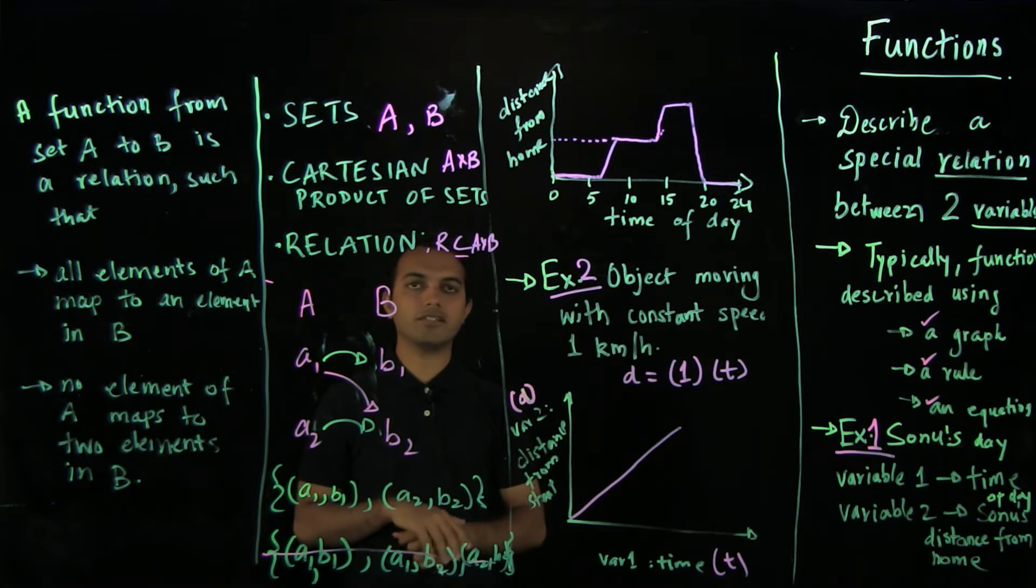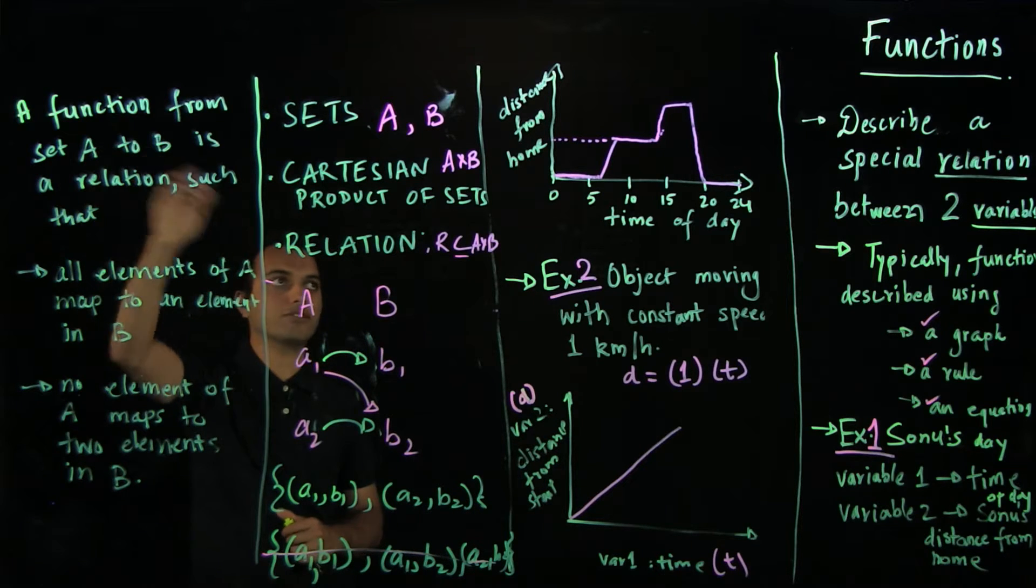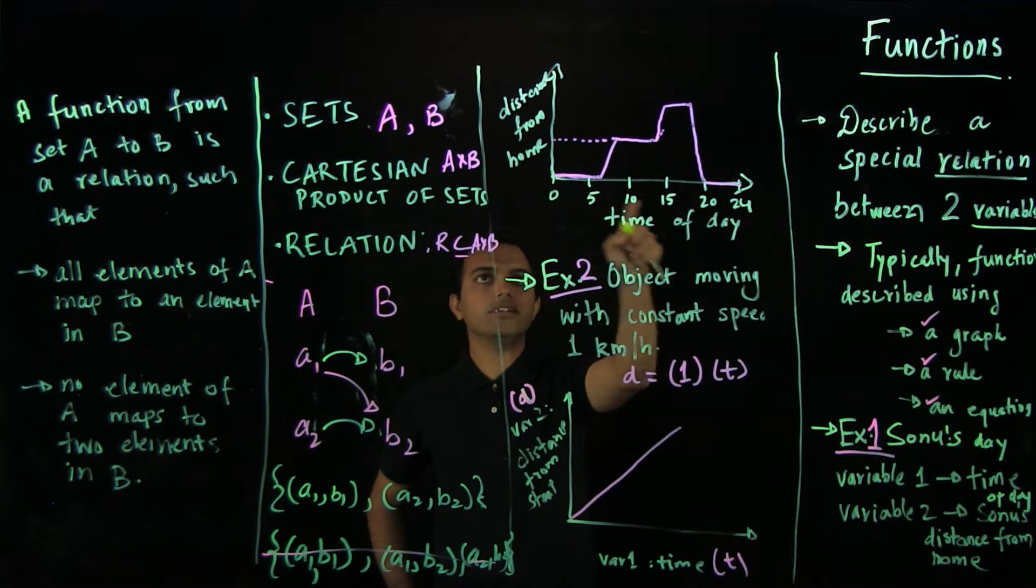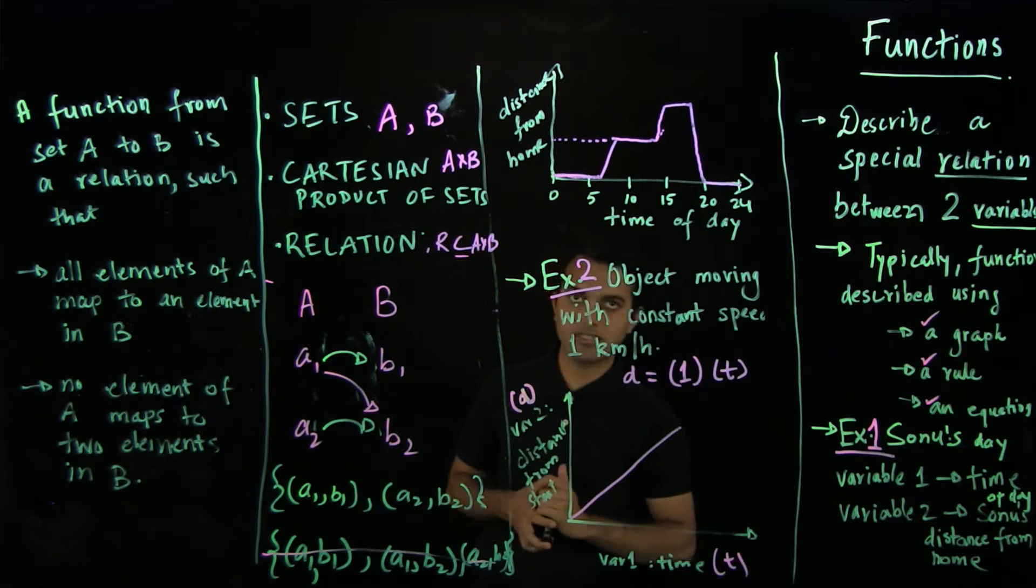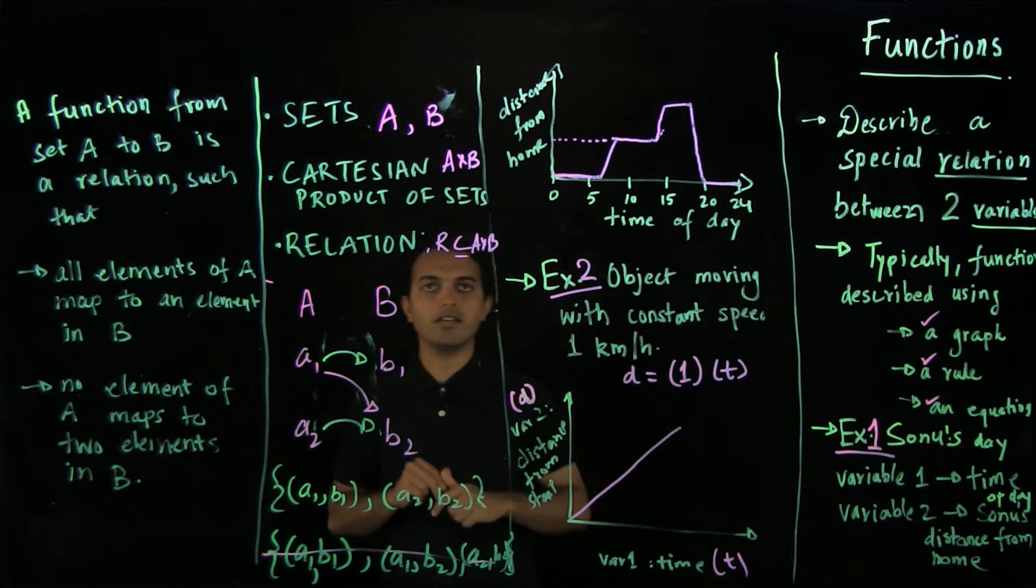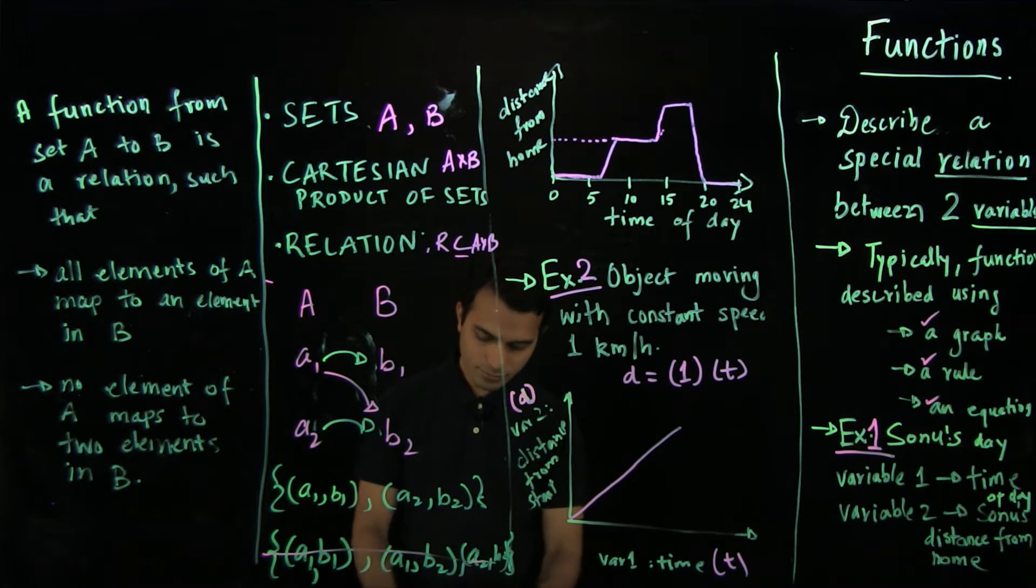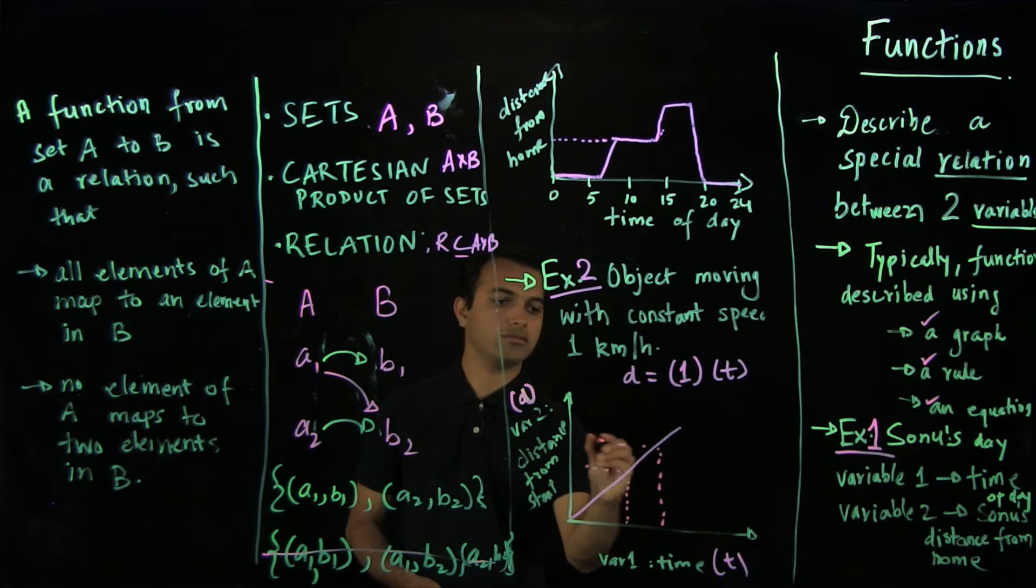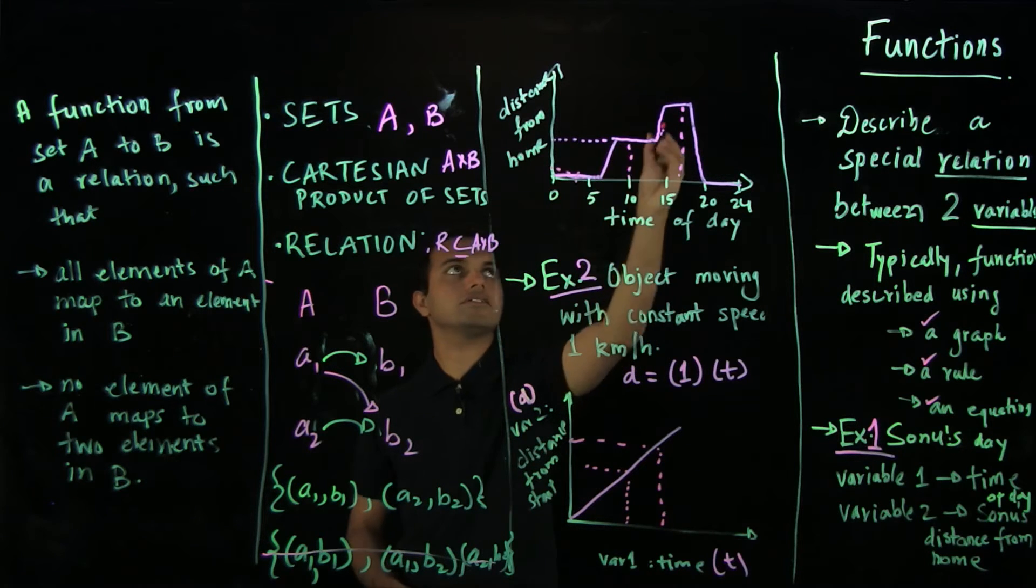And let's see if this satisfy the properties that we want our function to specify. So first of all, a function has to be a relation from set A to B. So this is a relation because for each variable, each element of variable one, such as 0 to 24, we have something on the y-axis too. So there is a point on the map corresponding to each variable on the x-axis. And the reason, so that satisfies property one. And similarly, here too, for each element we have an element on. And here too, we have, for any element we take here, we have an element here.